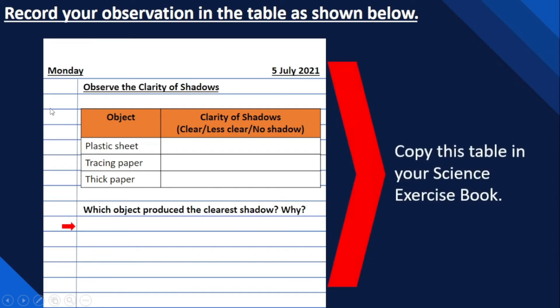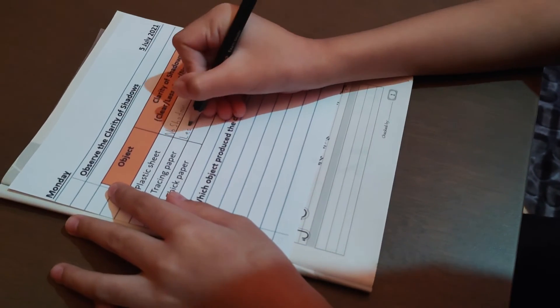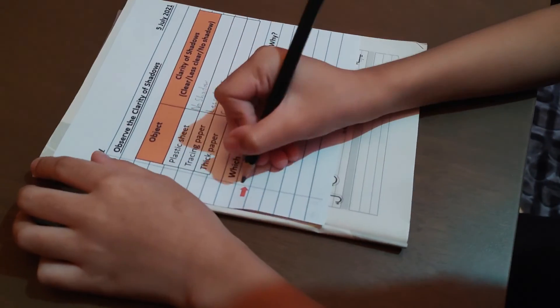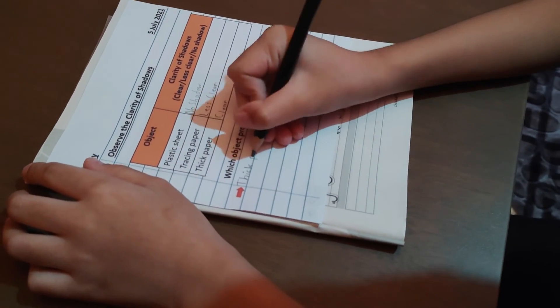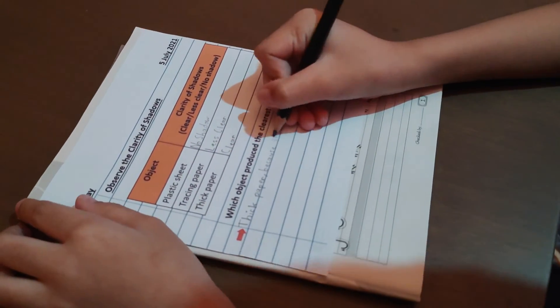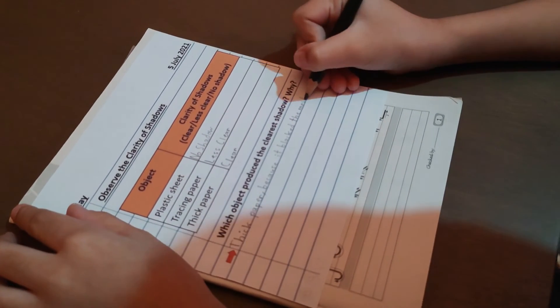After you have done the investigation, please record your observations in your science exercise book. Copy this table in your exercise book and answer the following questions. All of your answers are based on the experiment or investigation that we have done earlier.